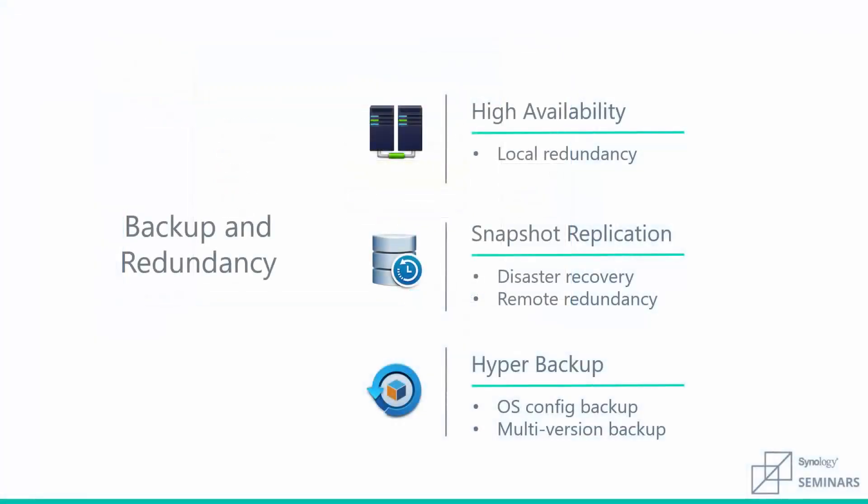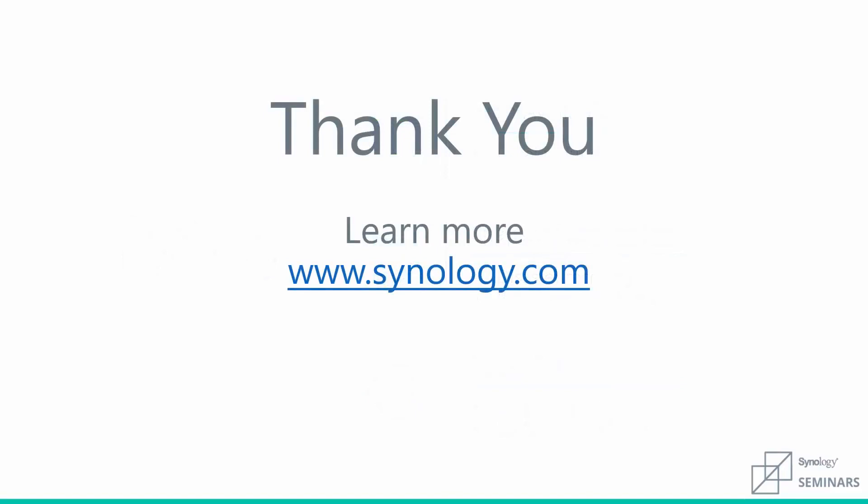This has been a quick look at how we handle backup and redundancy. To recap: for local redundancy, it's high availability; for disaster recovery and remote redundancy, you'll use snapshot replication; and for multi-version, traditional restorable backup, it's Hyper Backup. All three pieces of software should be used together to take advantage of each other's strengths. All three are absolutely free and ready to install right out of the box with Synology — no monthly fees, no additional fees. Thank you for taking the time to go through this seminar. For more information on any of the services discussed today, please visit www.synology.com.